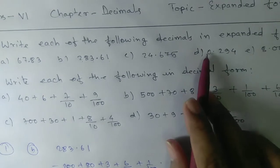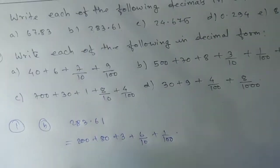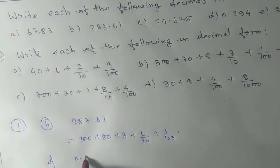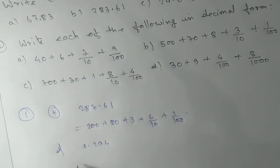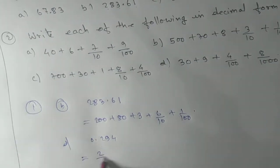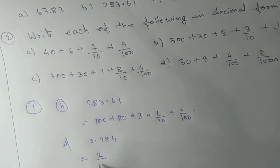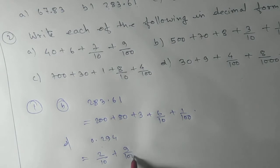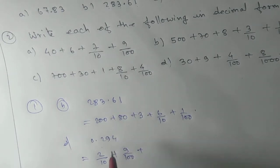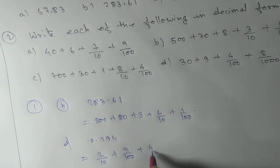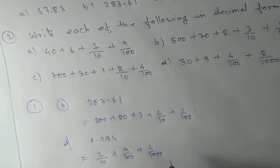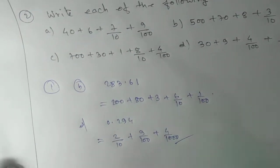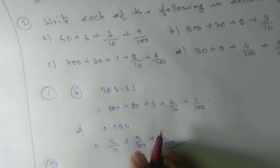If I take another one, D number, how are we going to convert this one? Zero point two nine four. Your answer is 2 by - it is in the tenths place - 2 by 10. It is in the hundredths place, 9 by 100, and this one is in the thousandths place, that means 4 by 1000. This is your expanded form.